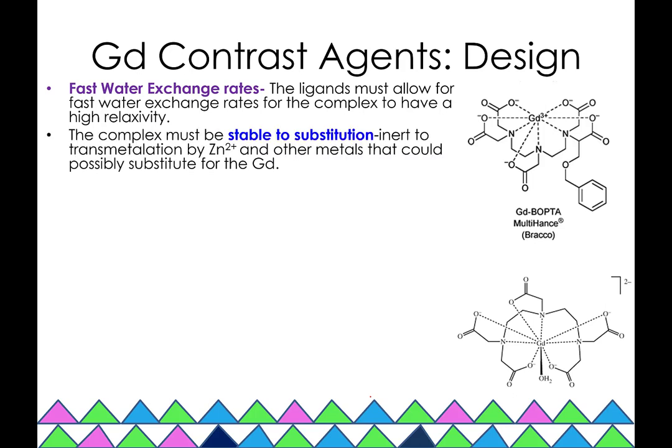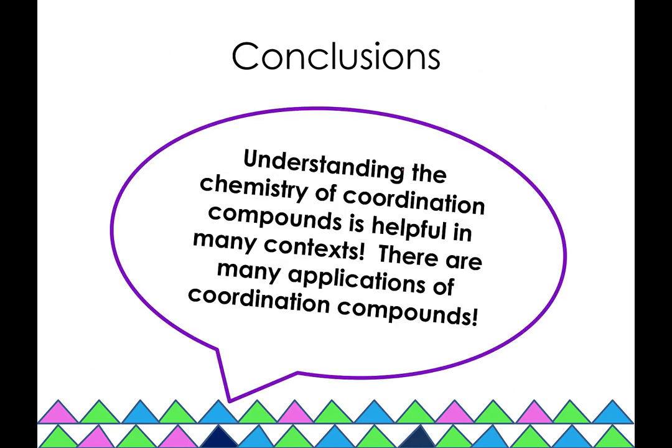We also need to consider exchange rates. The ligands must allow for fast water exchange rates so the gadolinium can interact with many water molecules and speed up the relaxation time of many protons. Since gadolinium is toxic and can substitute in for zinc 2+ and other metals, the complex must be stable to substitution. These examples — hemoglobin, cisplatin, and gadolinium — are just a small sampling of the many coordination compounds in biochemistry.